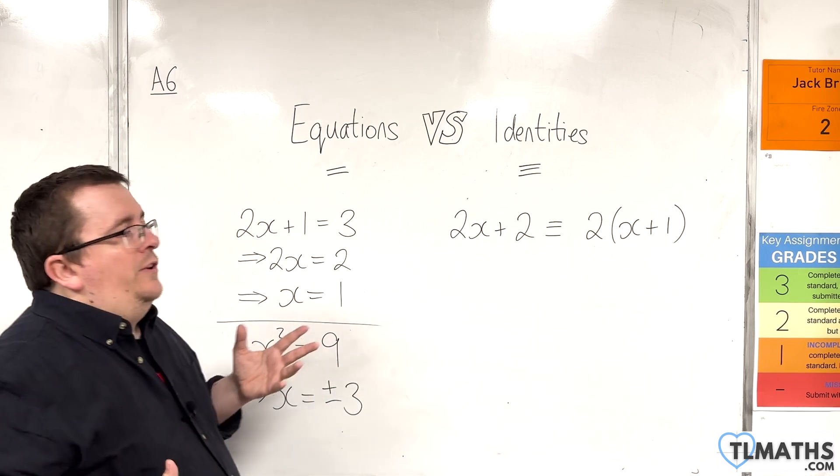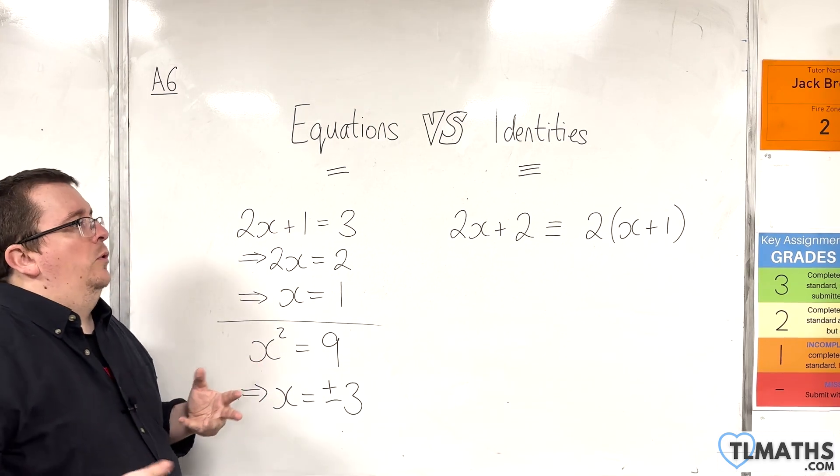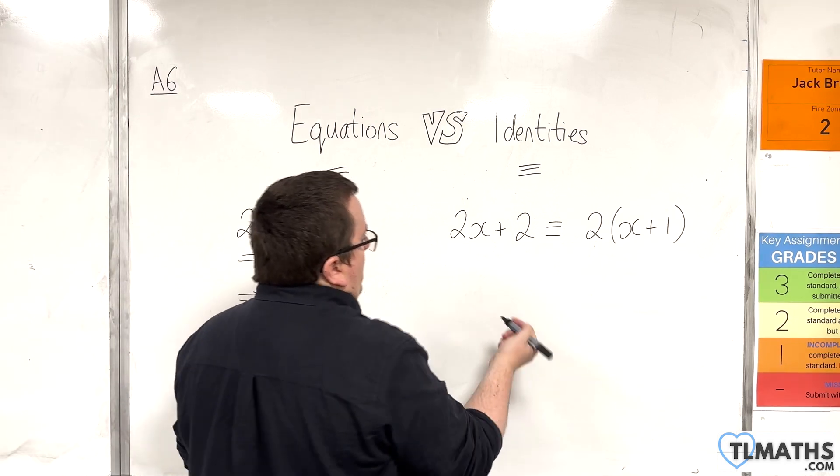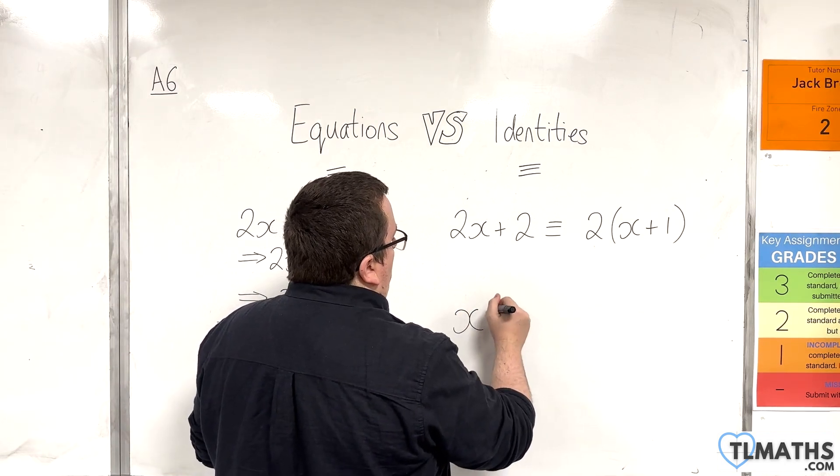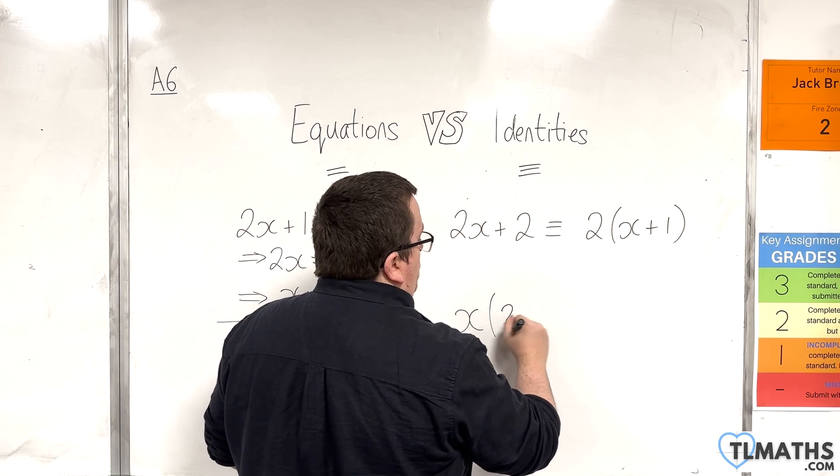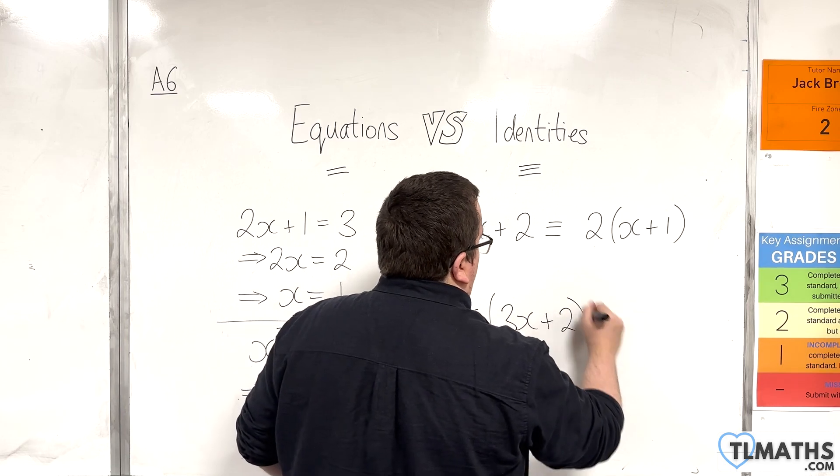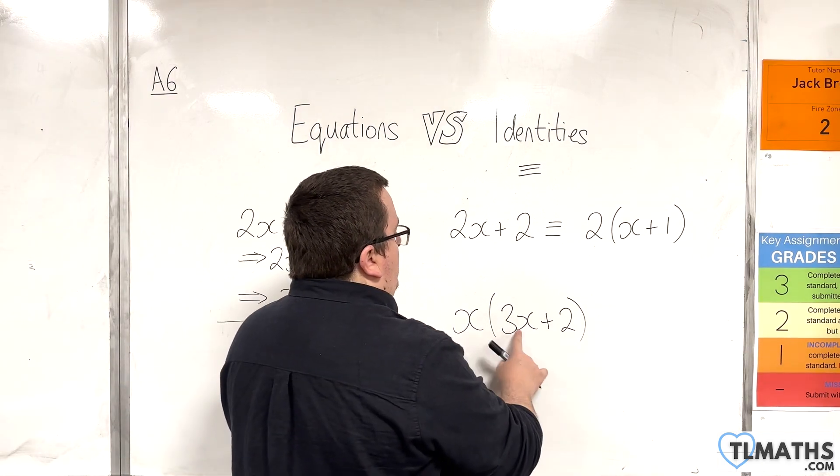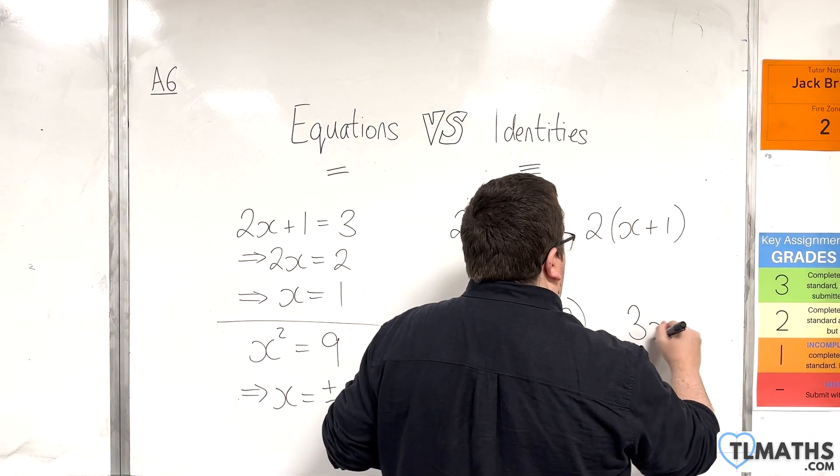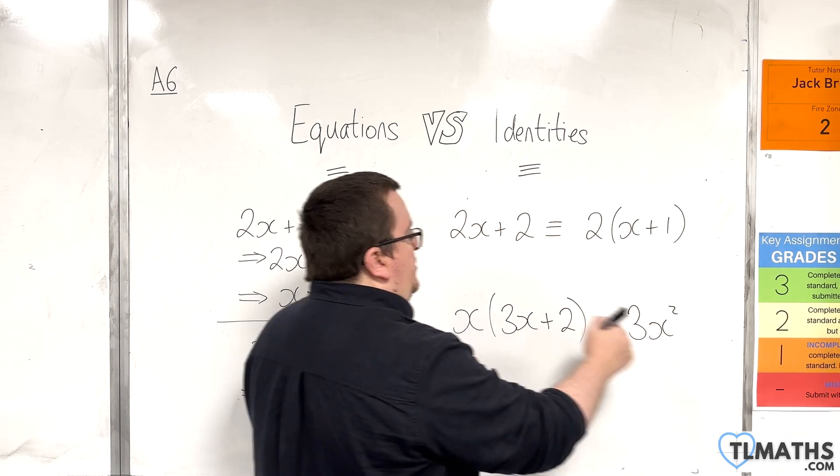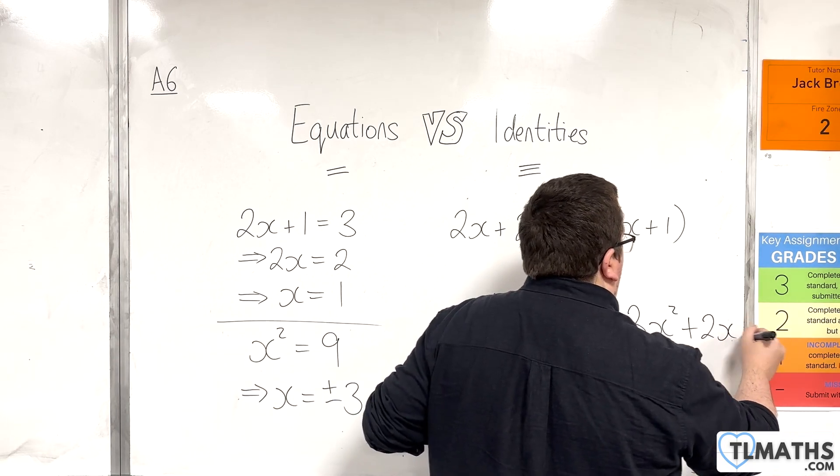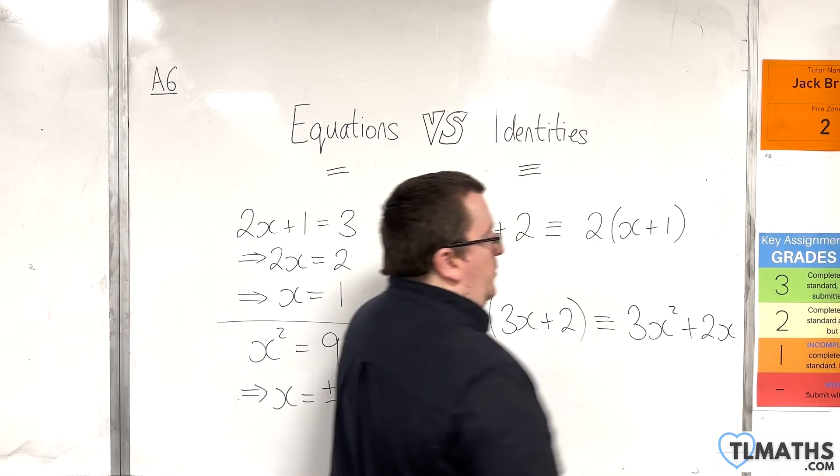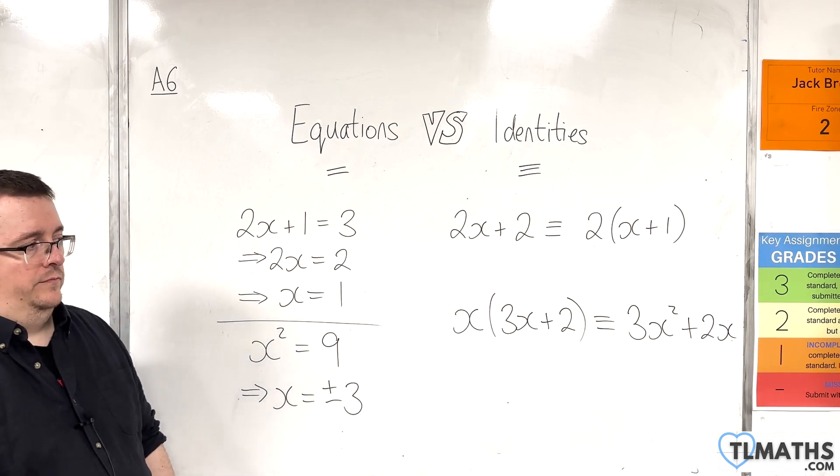So let's consider another example. Well, I could have something that says, let's say I've got x times (3x + 2). Now, if I were to expand those brackets out, I would have x times 3x is 3x². x times 2 is 2x. So this expression is equivalent to this expression.